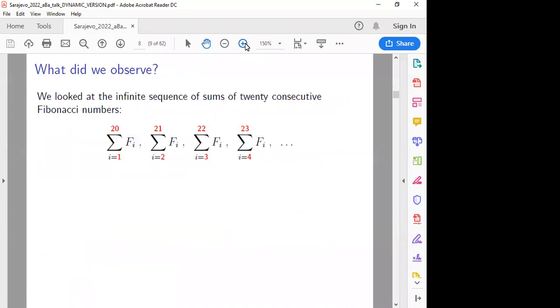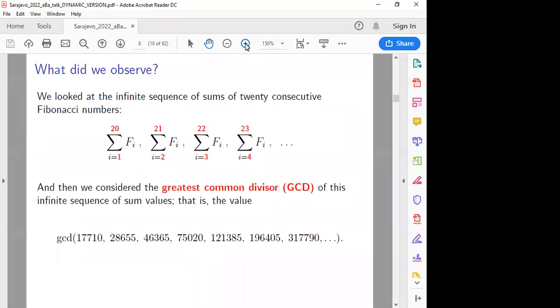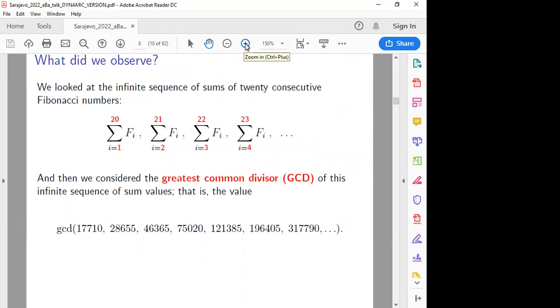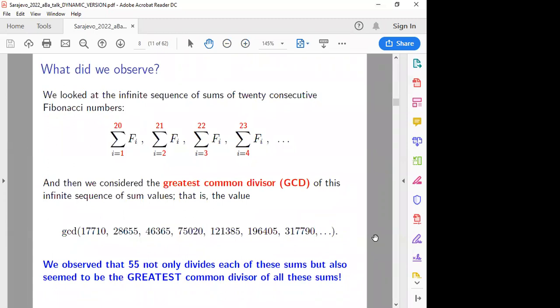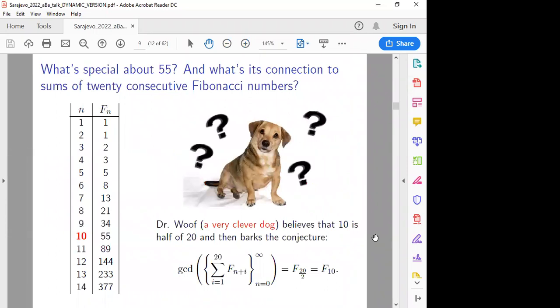Okay. So what we observed, we were looking at this infinite sequence of sums of 20 consecutive Fibonacci numbers, and then we considered the GCD of these infinite sequences, as we see here in the bottom line, and we observed that 55 not only divides each of these sums, but also seemed to be the greatest common divisor of these sums.